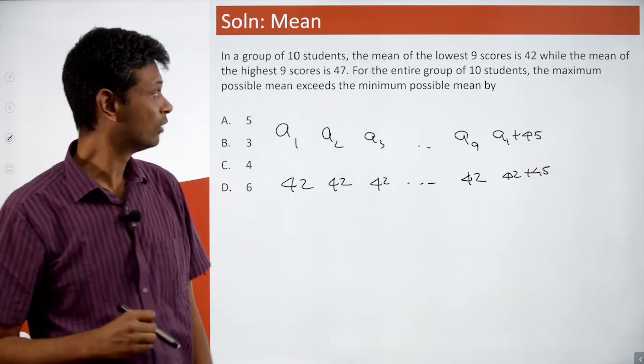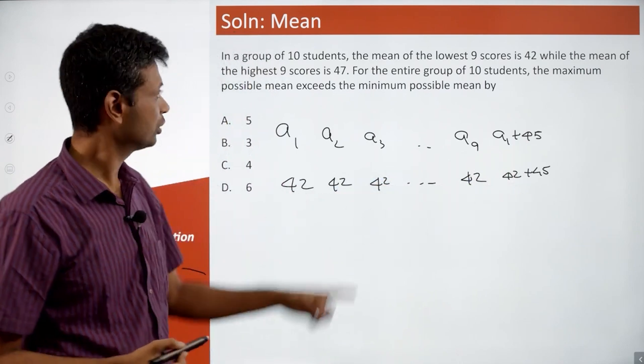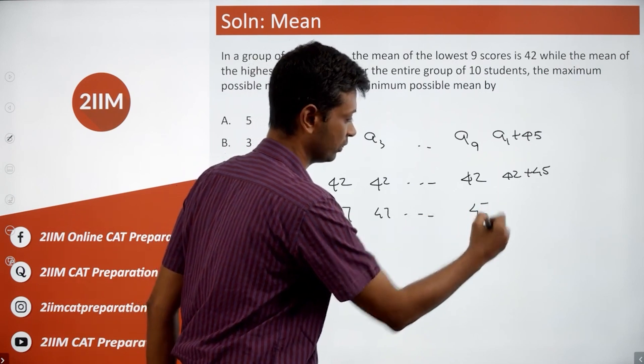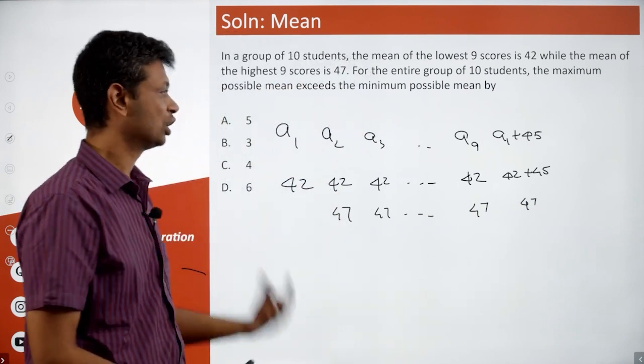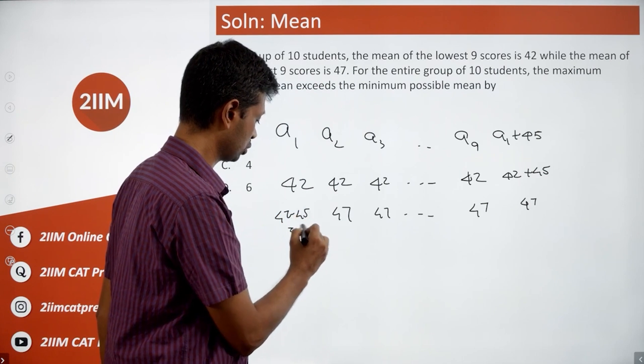The other extreme is when each of the last numbers is 47. So this is 47, 47, 47—all these are 47. This number is also 47, so the first number is 47 minus 45, which is 2.